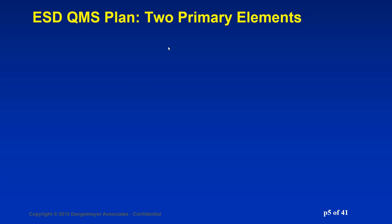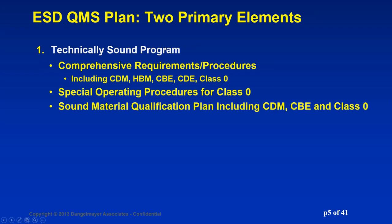There are two primary elements to the QMS plan. One is the technical aspects — clearly vitally important — and many companies do a good job with this piece, although not all. It's essential to have comprehensive requirements and procedures that include charge device model, human body, charge board event, cable discharge, and class zero. In many cases, you'll need a special operating procedure for class zero, and of course a sound qualification plan for the materials in your program.